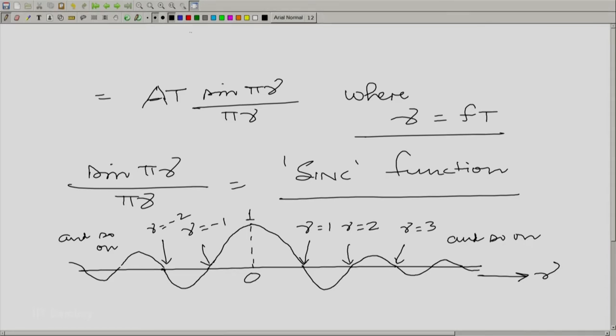Let us summarize the properties of this function. Let me mark them right here. Even function, damped sinusoid, and nulls at integers. These are the 3 things that we need to remember. And therefore, we could now draw the Fourier transform of the rectangular pulse. Let us draw the rectangular pulse and its Fourier transform together.